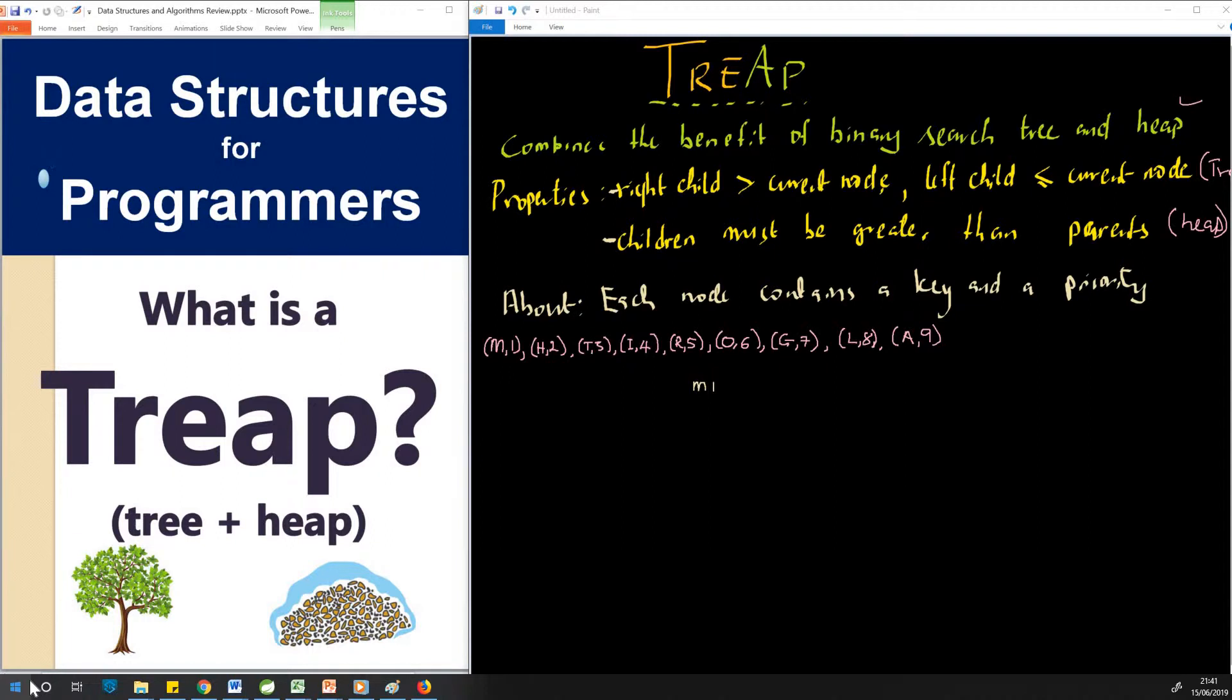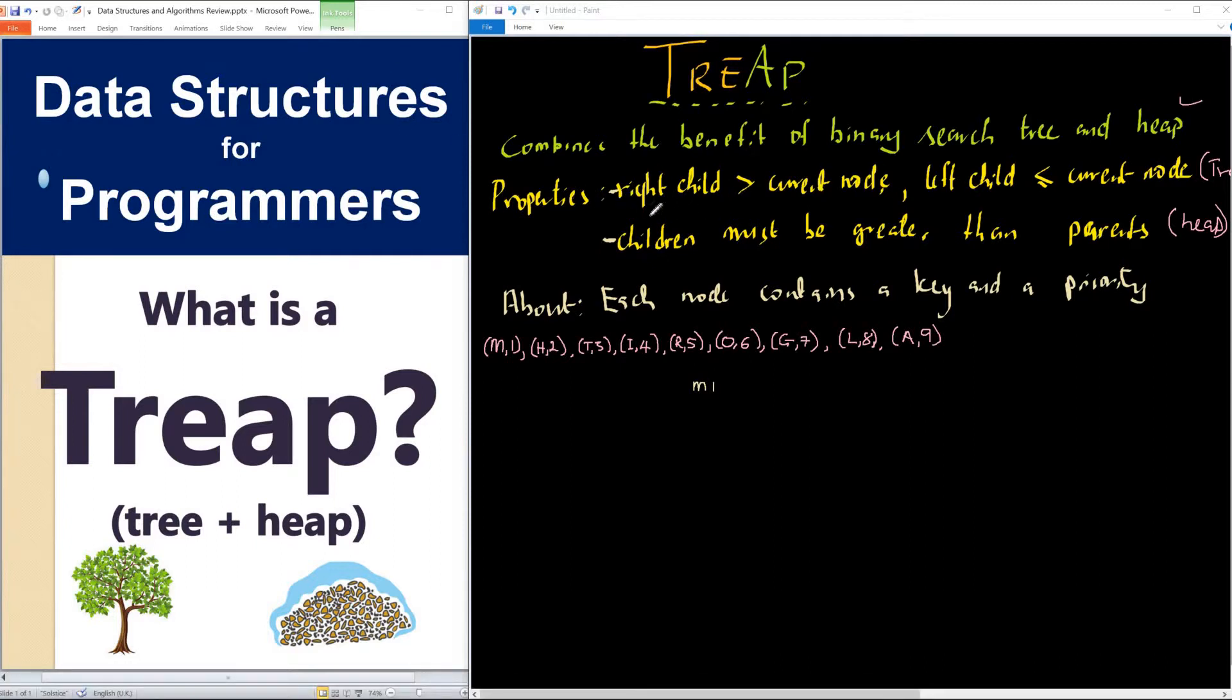The properties are that first, the right child of the current node must be greater than the current node, and the left child must be less than or equal to the current node. Again, the children must be greater than the parents, so the subtree items must be greater than the parents. This is the heap property, and the first one is the tree property.